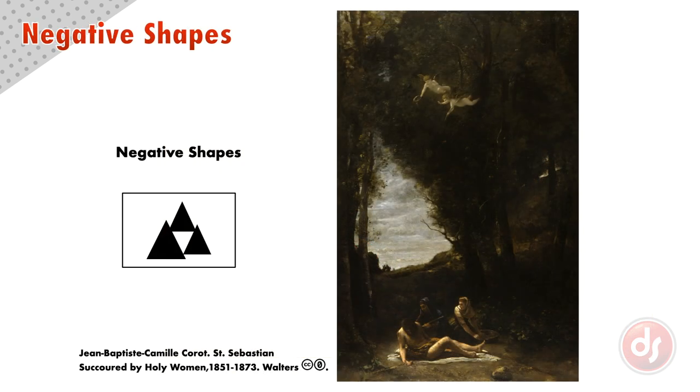Here in this image of Saint Sebastian by Corot, the trees in the background part from each other, leaving a gap of negative space. But this negative space creates a strong triangular negative shape floating above the figures, acting like an exclamation of the scene.